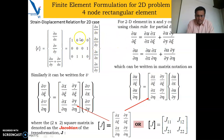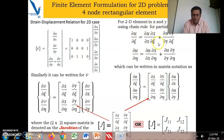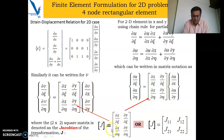Last time we saw that u and v are functions of N, which is a function of ζη, so we cannot directly differentiate u with respect to N. We have to use the chain rule of partial differentiation, and after applying this chain rule we could find u in terms of N as a function of ζη. In that process we obtained the Jacobian matrix, which is a scale factor relating xy coordinates with ζη coordinates.